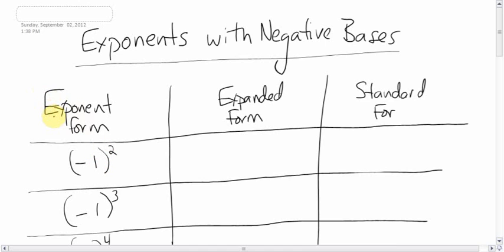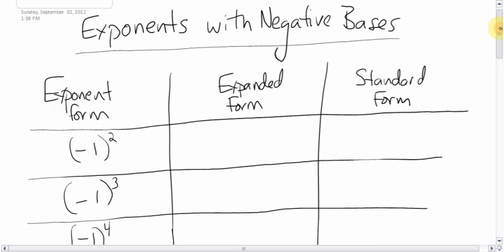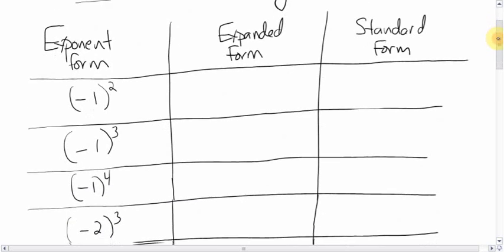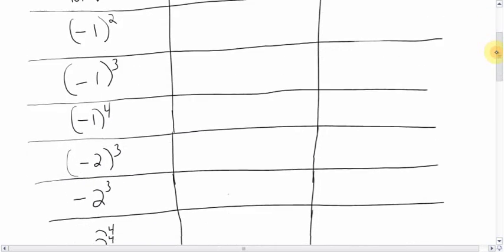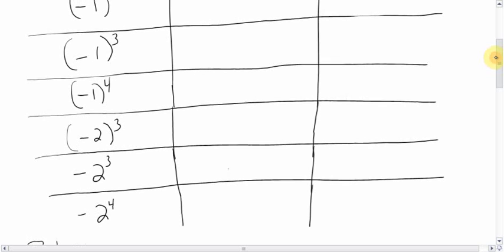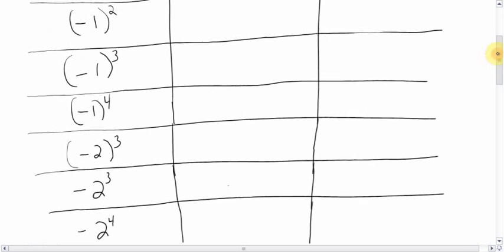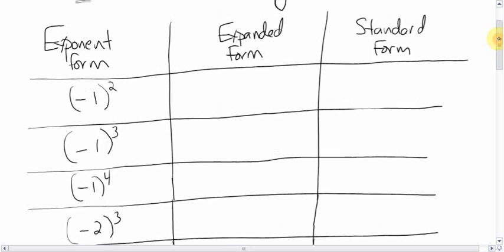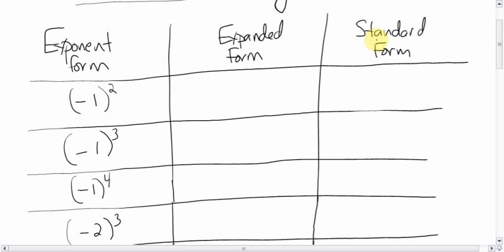Before we get to this, make a table with these headings: Exponent Form, Expanded Form, and Standard Form. Break it up, and just so you can judge how much space you need — you need 6 spots, or 6 rows going down, 7 including the title.